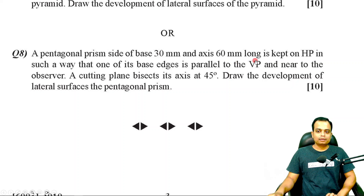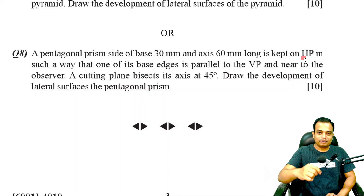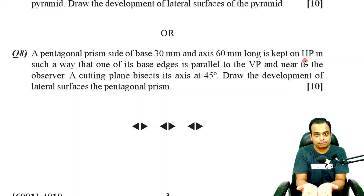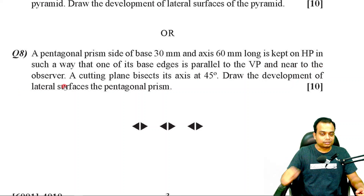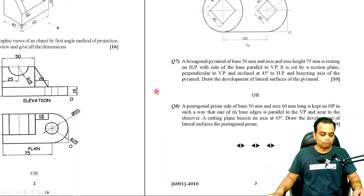...and axis 60 mm long is kept on HP. I'm assuming it has been kept with respect to its base — the pentagonal base on HP — in such a way that one of the base edges is parallel to the VP and near to the observer. A cutting plane bisects its axis at 45 degrees. Draw the development of lateral surfaces of the pentagonal prism.